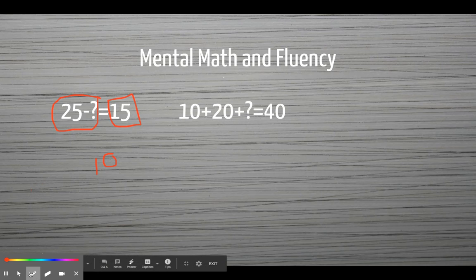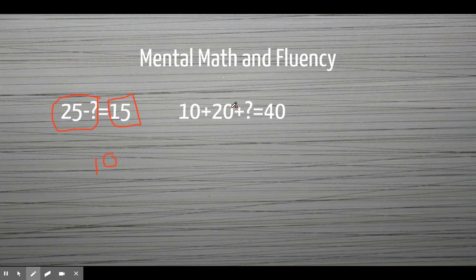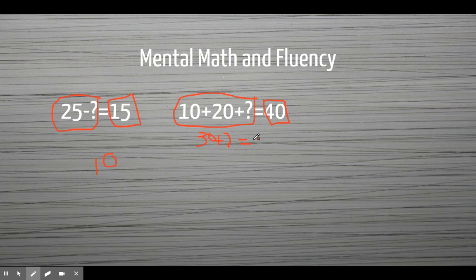Let's look at this one — a little bit more tricky. 10 plus 20 plus something equals 40. We want this side of the equation to equal the right side. First, I know 10 plus 20 is 30. Then I have to ask myself, what am I going to add to get 40? I know that I can jump by tens, so I'm going to go 30, and then another 10 is going to be 40. So I'm looking for plus 10 — we're going to add 10 into our equation.